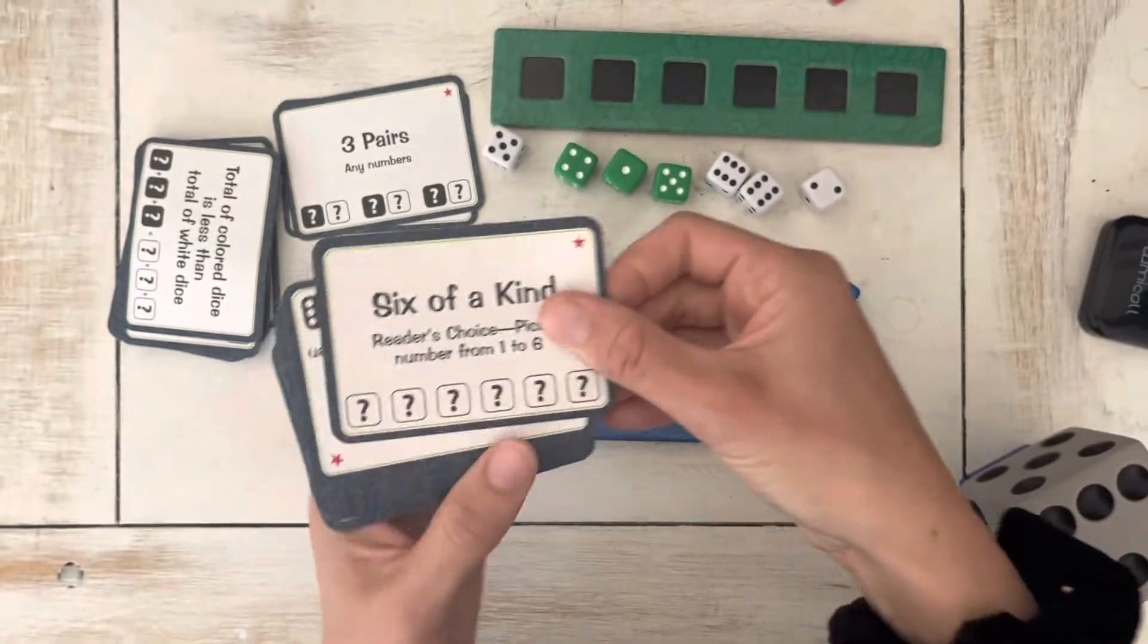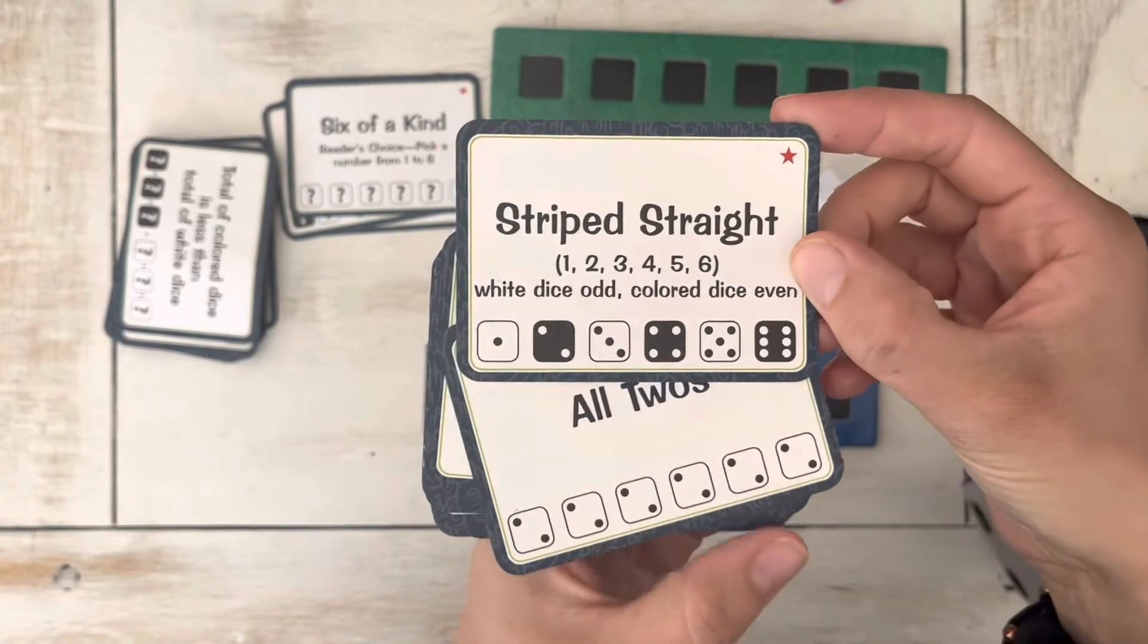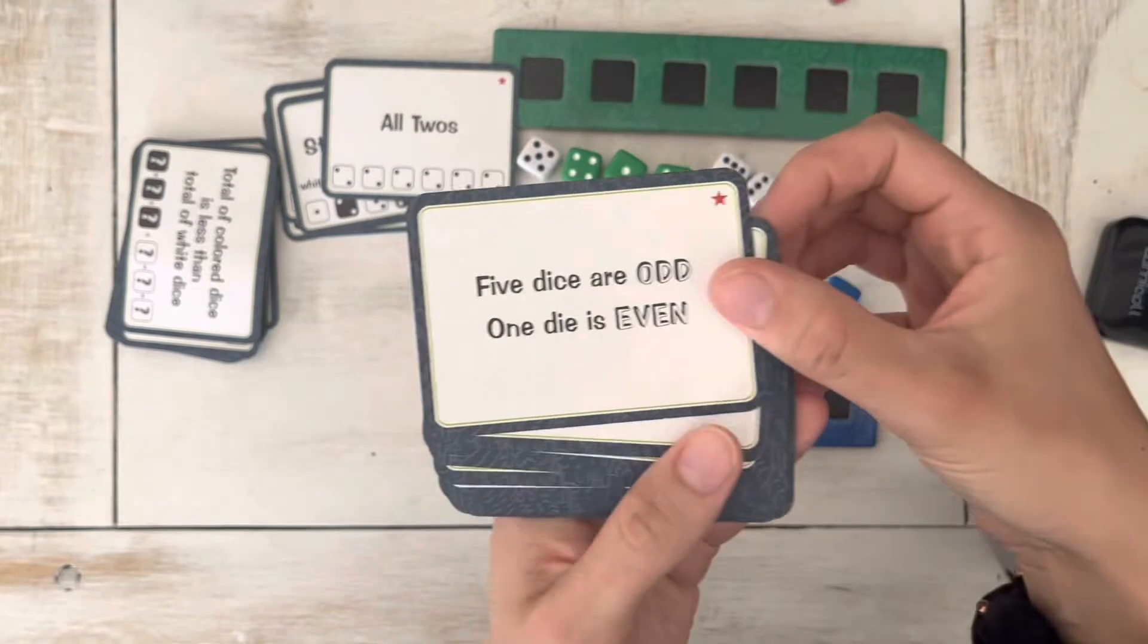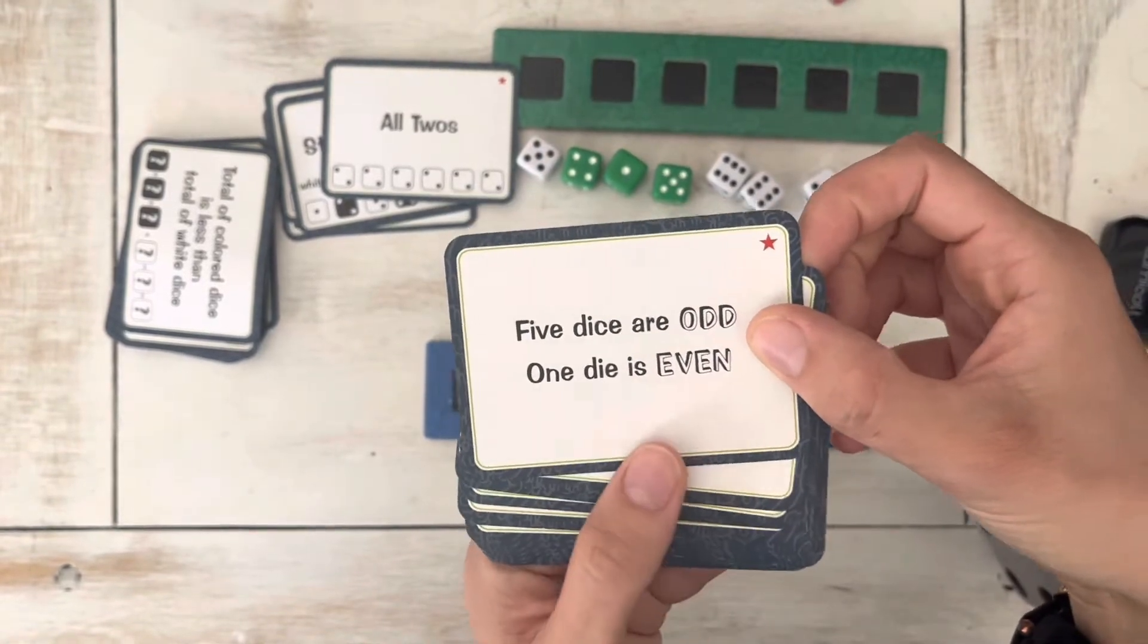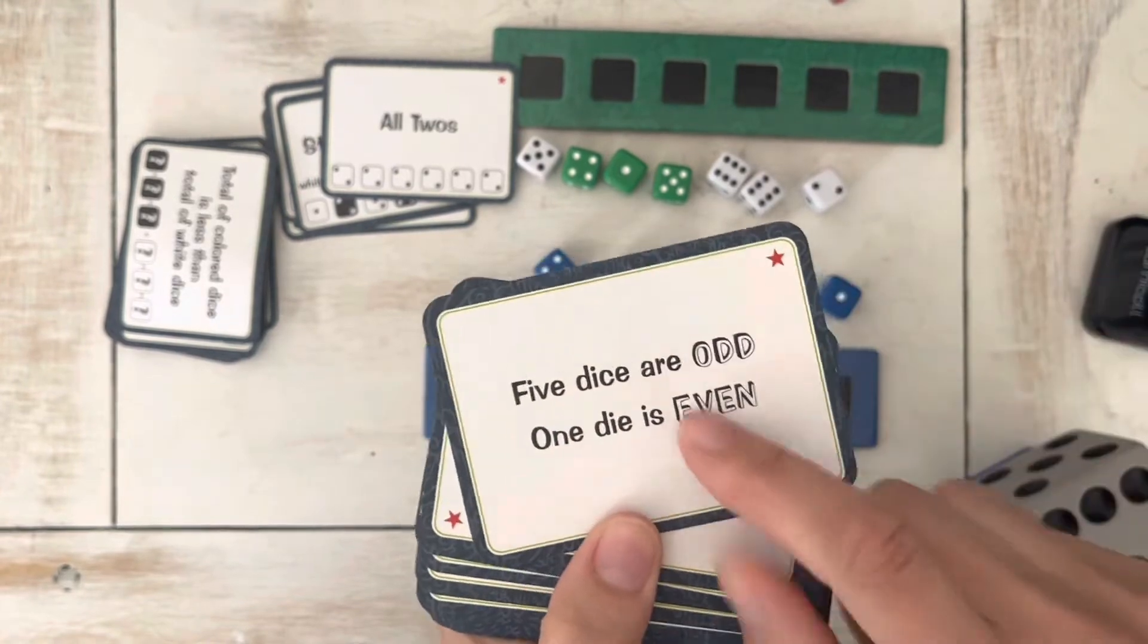Six of a kind. Here's a few more examples of the cards that you'll see. Striped straight. All twos. Five dice are odd. One dice is even. One die is even. This would be good even and odd practice.